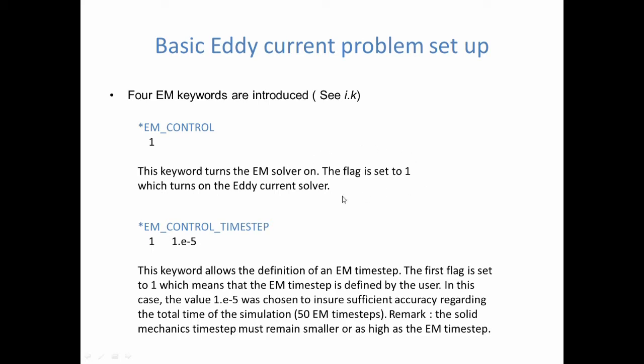So for the moment, we'll explain later what eddy current do exactly, but for the moment, let's just put that first flag to 1. The second keyword is the EM control time step keyword. So if you look at the manual there, the keyword manual, this keyword has got several options. In our case, we're going to define it as a constant electromagnetic time step and set the value to 1 to the power minus 5.